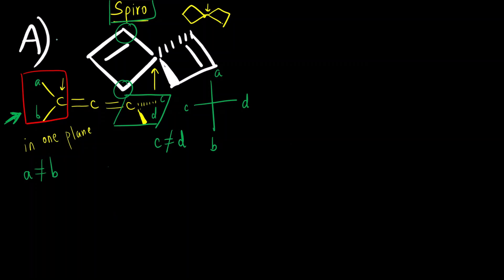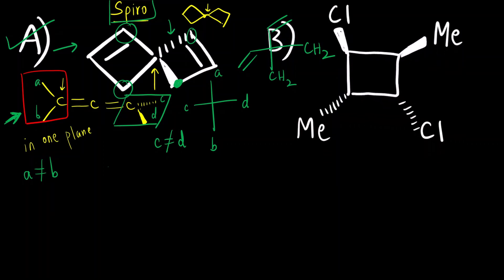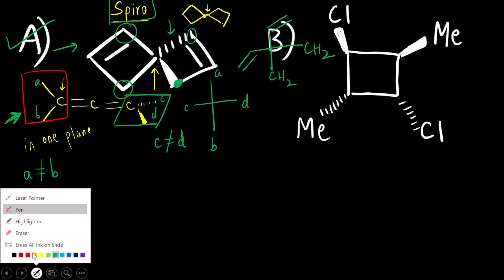If I look from the left side of option A: above there is an alkene, below there is a CH₂ group, into the plane there is a dash bond with a double bond on the left, and CH₂ on the right. So the groups are all different — this molecule is chiral.